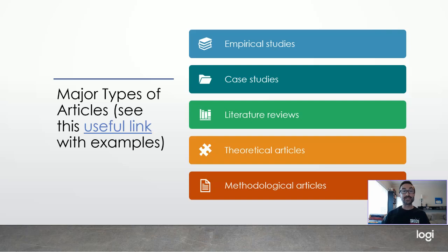When you dig into the academic literature and when you read for class, you will find many types of journal articles. These differ in terms of what kinds of research methods they use — whether they tend to be quantitative, qualitative, or mixed methods — and how they are written, the style. The main ones I'll briefly review are empirical studies or original research, case studies, literature reviews, theoretical or applied theoretical articles, and methodological articles.